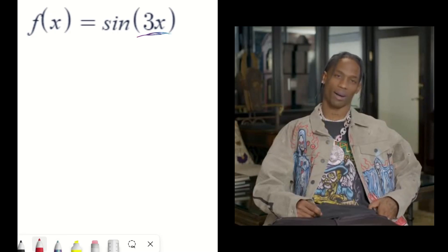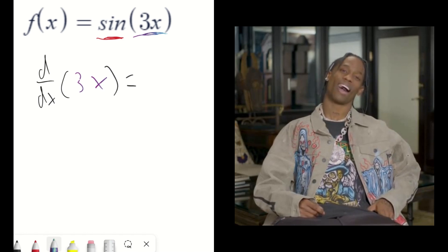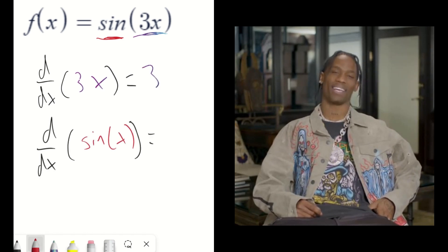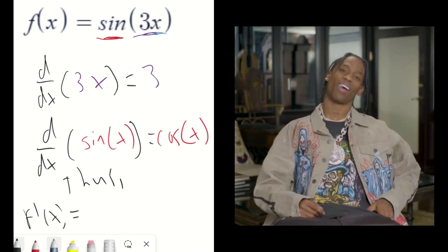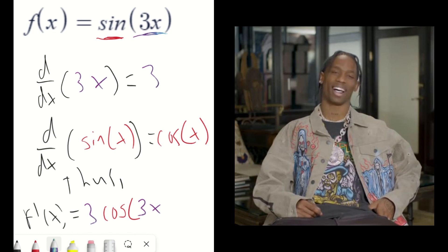Oh, that's confusing, but let me give it a shot. In the case of sine of 3x, the derivative of 3x is 3. The derivative of sine of x is cosine of x. So the chain rule states that the derivative of the whole function is 3 times cosine of 3x.